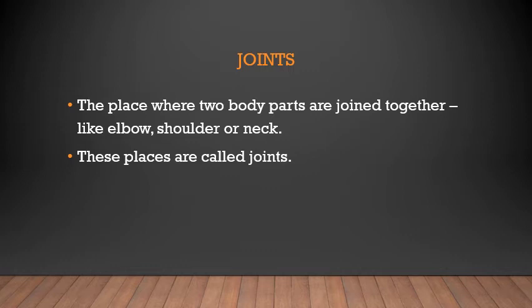Can you name more such joints? If our body had no joints, would it be possible for us to move in any way at all? Joints are the places where two body parts are joined together — like elbows, shoulders, and necks. We are able to move because of these joints; they help us have different kinds of body activities. Press your finger against your head, face, neck, back of the shoulder, hands, and legs — you feel something hard. Those hard structures are the bones.